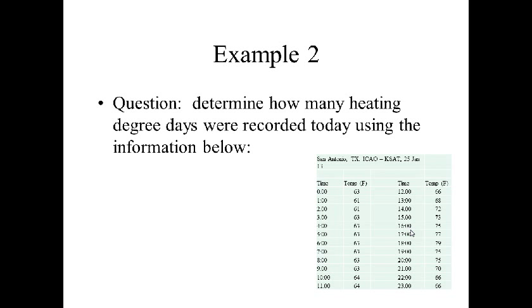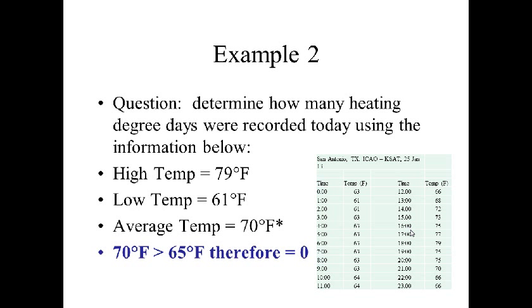In example number two, we're doing the same thing again, only looking at San Antonio, Texas from January 25th, 2013, where I have a much larger temperature spread. The high temperature was 79 degrees and the low was 61. Averaging those gives 70 degrees Fahrenheit — 79 plus 61 divided by 2. Since 70 degrees is greater than 65, meaning there was no need in San Antonio to heat their homes, the value of heating degree days is zero. If we average all 24 hours of temperatures, the actual average is 67 degrees Fahrenheit — still greater than 65, still zero heating degree days, but the statistical error is growing.